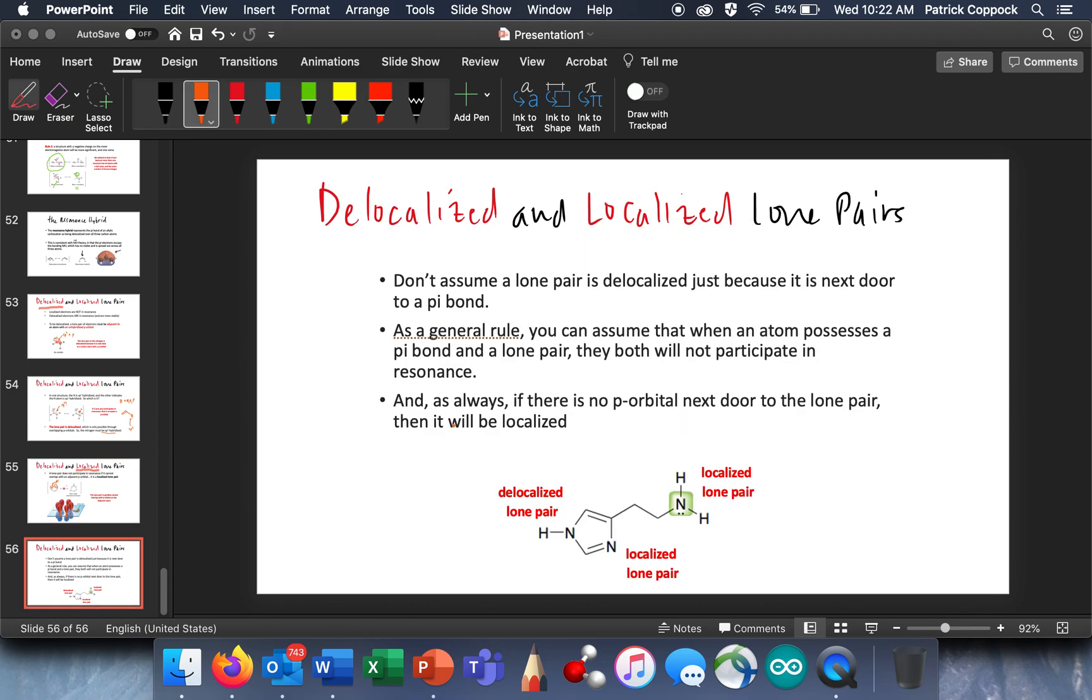All right, so, don't assume that a lone pair is delocalized just because it's close to a pi bond. As a general rule, you can assume that when an atom possesses a pi bond and a lone pair, they will not both participate in resonance. And, as always, if there's no p-orbital next to the lone pair, then it will not be delocalized. It will be localized.